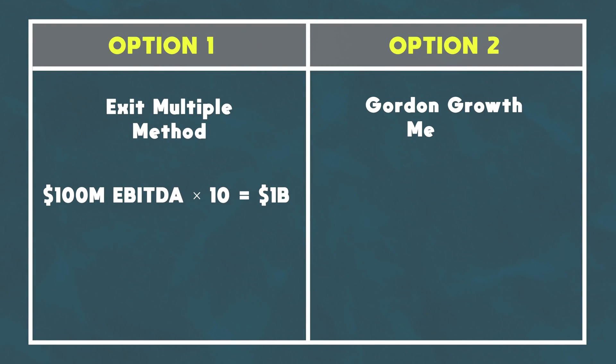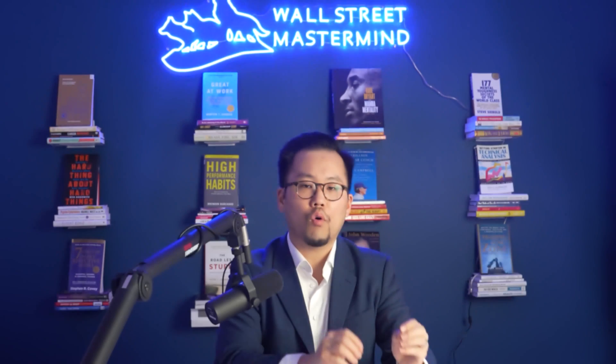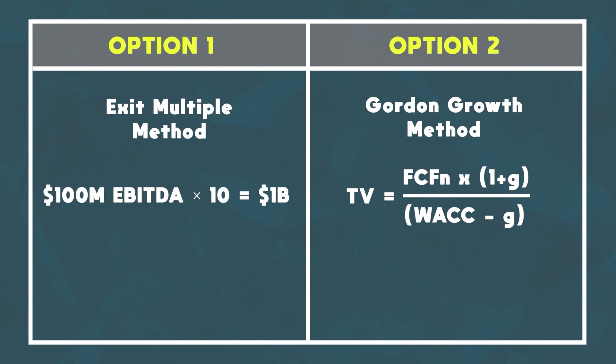The other method is the Gordon growth method, also known as the perpetuity growth method. This one is more academic in nature. Basically there's a formula that says: terminal value equals the free cash flow in the last year times one plus the long-term growth rate, all divided by the weighted average cost of capital minus the long-term growth rate. Just know that you should get to roughly similar terminal value figures using these two methodologies — they won't be exactly the same, but they give you an approximate range. You can use both methods to triangulate and make sure the number is in the right ballpark.